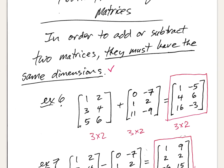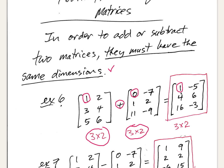Here I've got two 3 by 2 matrices, and I want to add them. What you simply do is add corresponding entries. The entry in the first row and first column of the first matrix is added to the first row and first column entry of the second matrix: 1 plus 0 is 1. Then 3 and 1 is 4, and so on throughout the matrix.